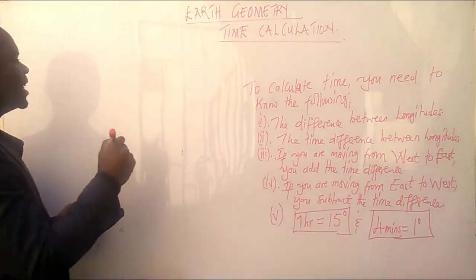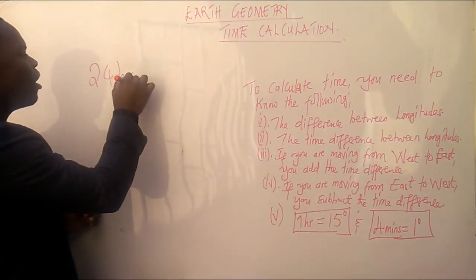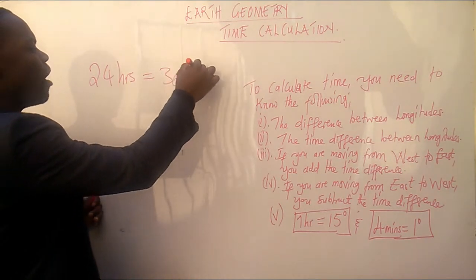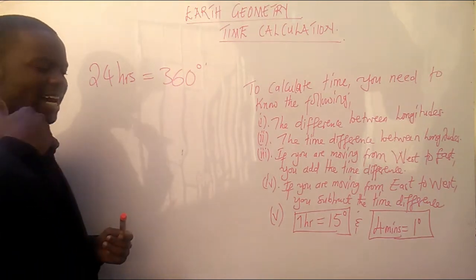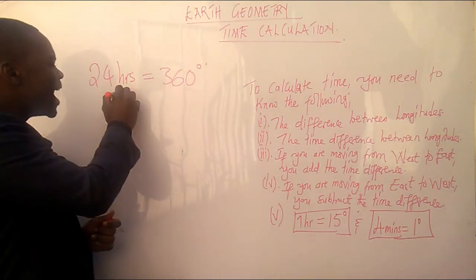In the preamble, I said the earth rotates 24 hours. 24 hours in it. 24 hours, 360 degrees. This is how the earth rotates. So now, we can ask ourselves, what about 1 hour? What about 1 hour? How many degrees does it take the earth to rotate?